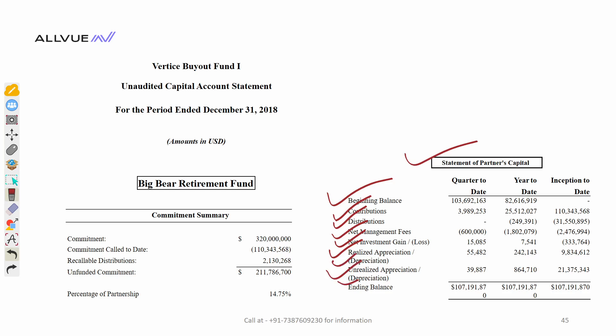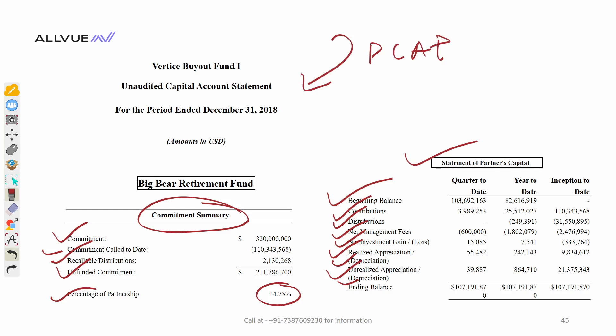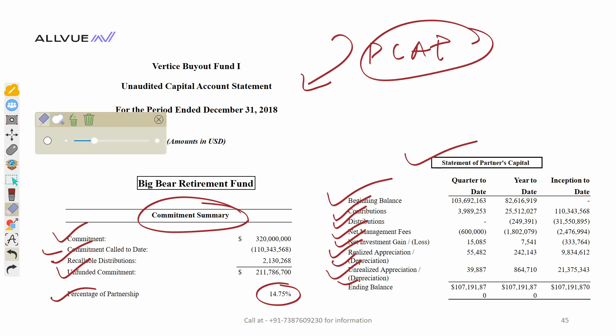Apart from that, we also maintain a commitment summary — that includes the total amount of capital signed or approved, commitment called to date, recallable distributions, unfunded commitment, and percentage. This is how we maintain the data in systems like Geneva, Investran, and other accounting platforms. This is your PCAP — Partners Capital Account Book. This content is important and you may expect many interview questions around it: how we prepare it, the contents and amounts, and even the accounting entries for each item.